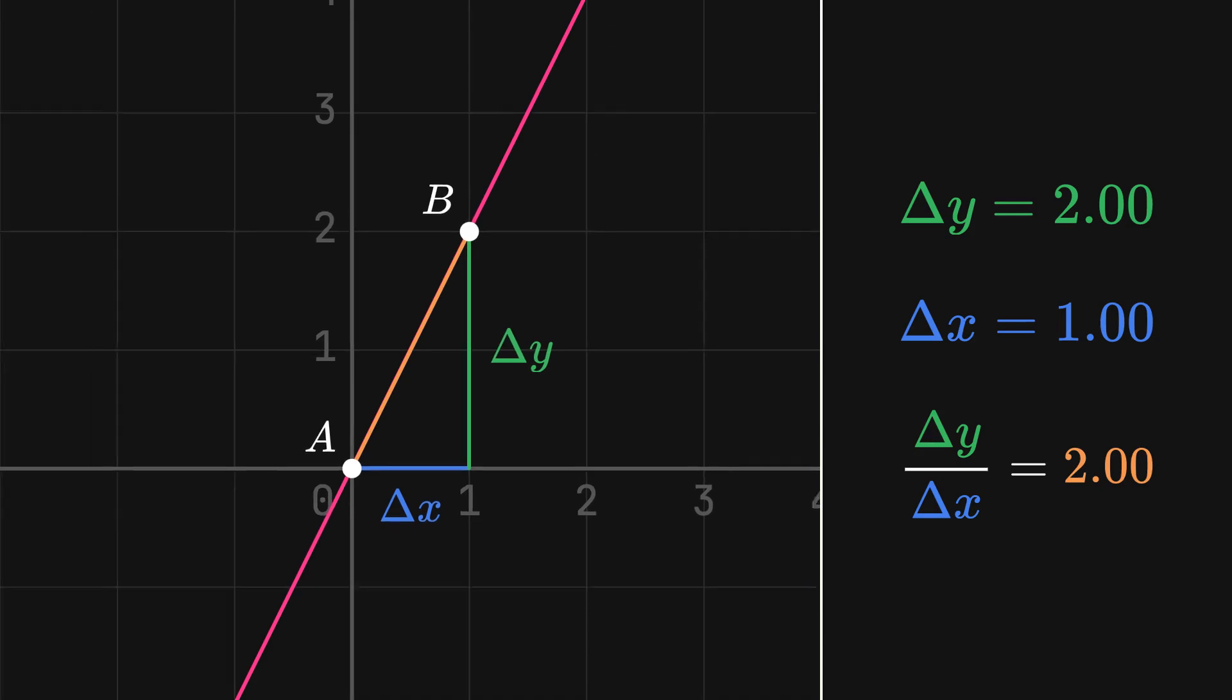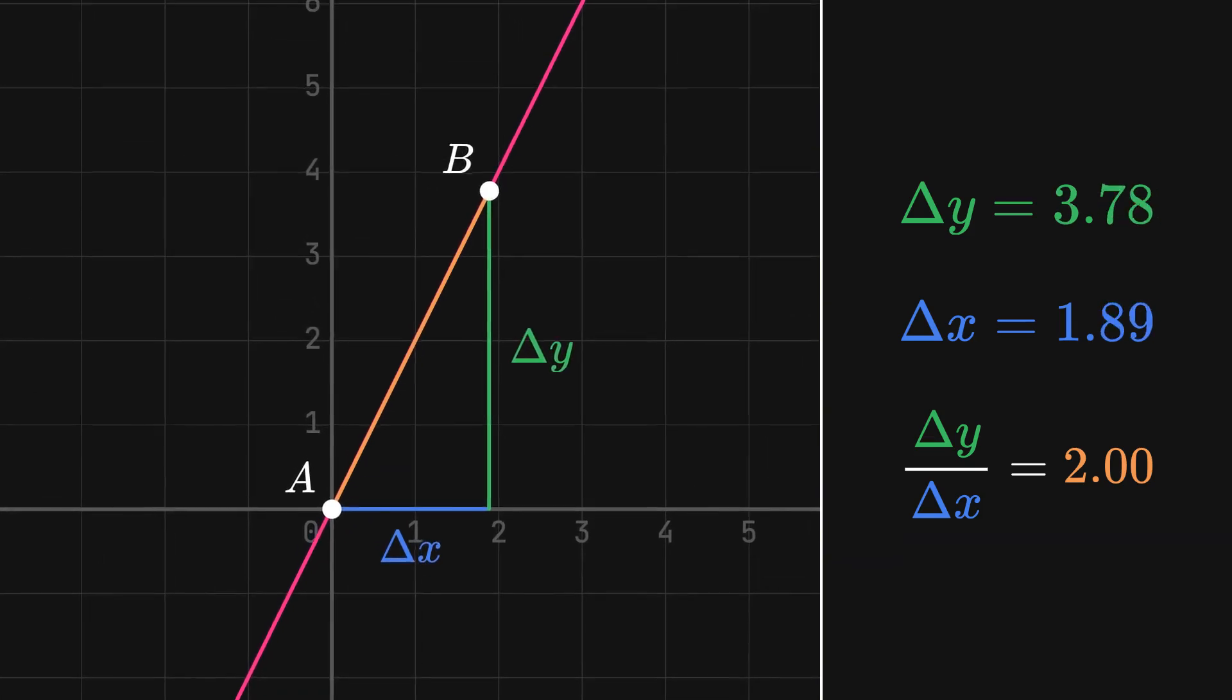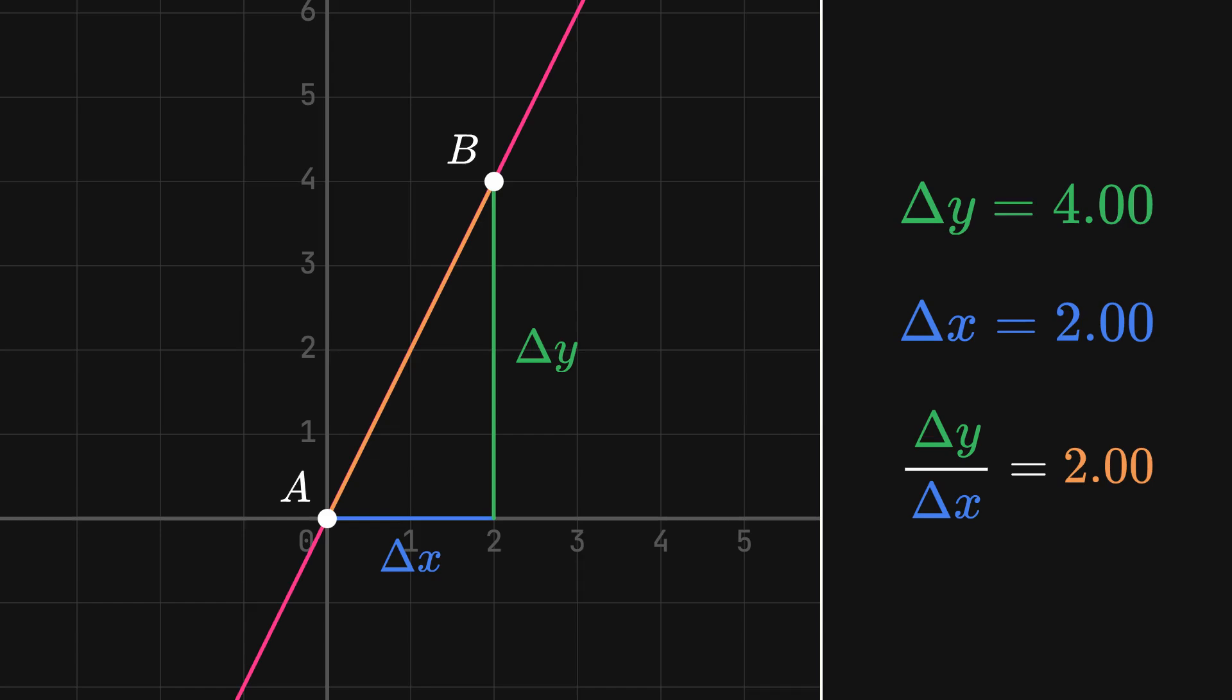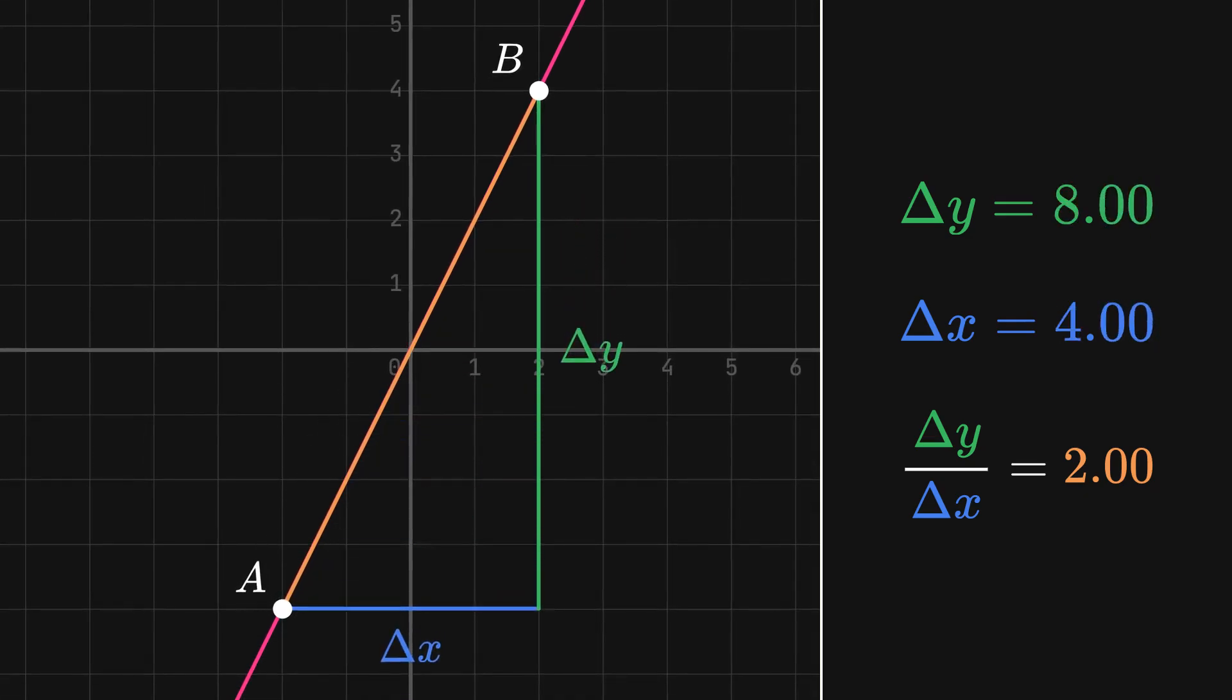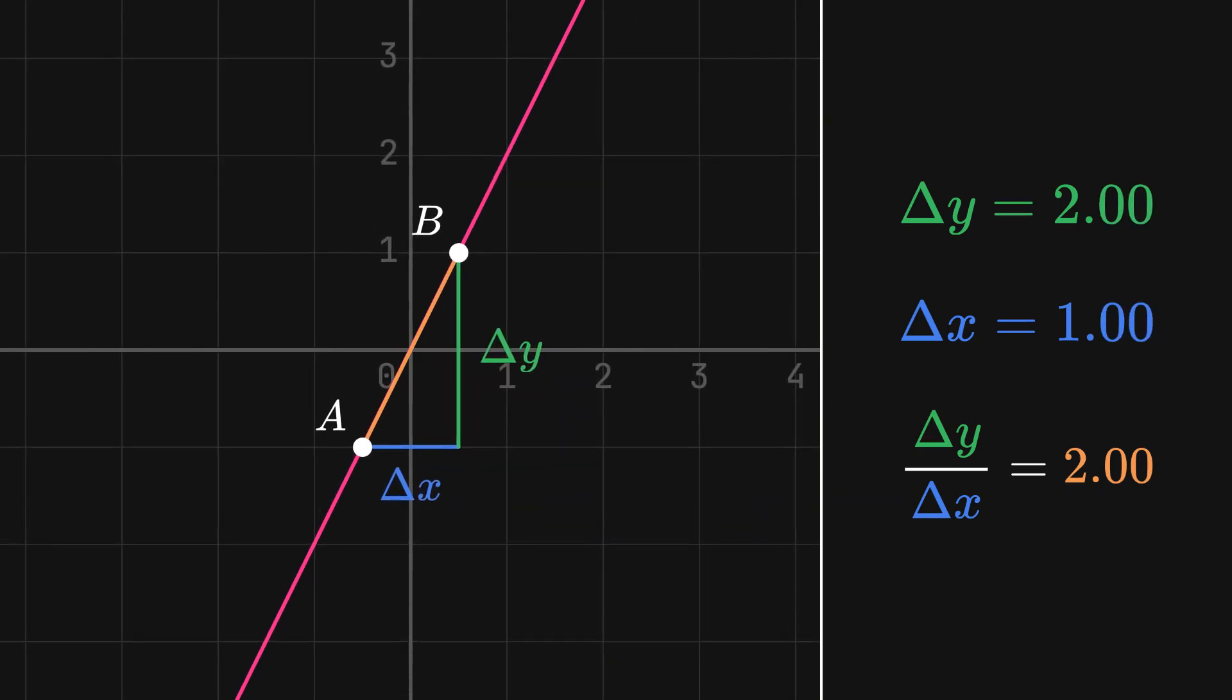If we made our change in x equal to 2, our new change in y would then be 4. Notice how our rate of change is still 2. This is because the graph is linear. No matter where our two points are on the graph, the change in y will always be double our change in x, so our rate of change stays the same.